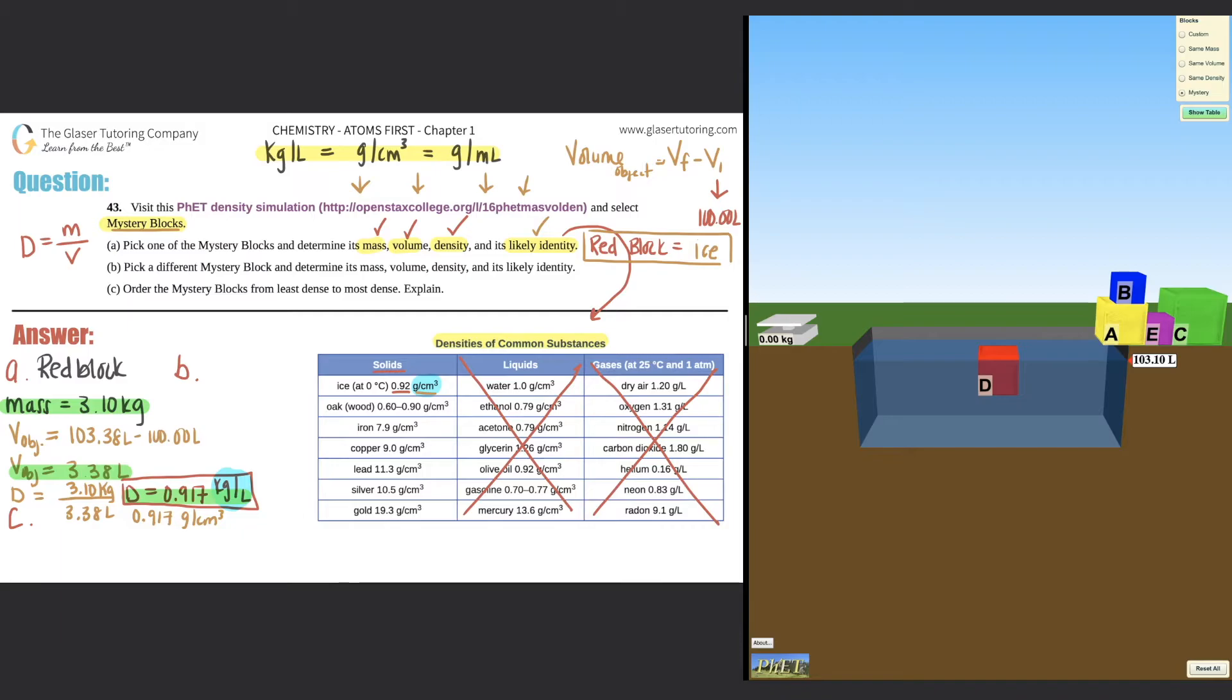Let's move on to B. Pick a different mystery block and determine its mass, volume, density, and its likely identity. So same thing here. I'm going to pick now, let's see, get rid of this red. I'm going to pick my favorite starburst color. Well, obviously there's only one other color, right? Yellow. I'm that person. I am that person that likes the yellow starburst. So first things first, we got to find out the mass of the yellow block. So I'm just going to put over here, yellow block.